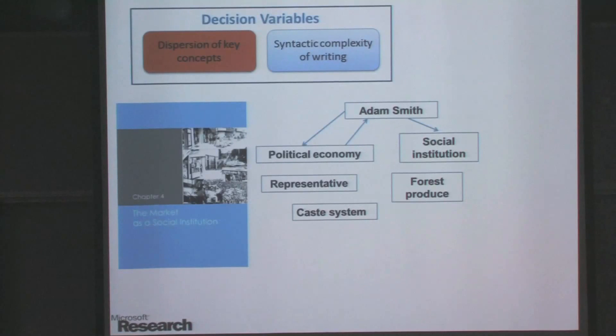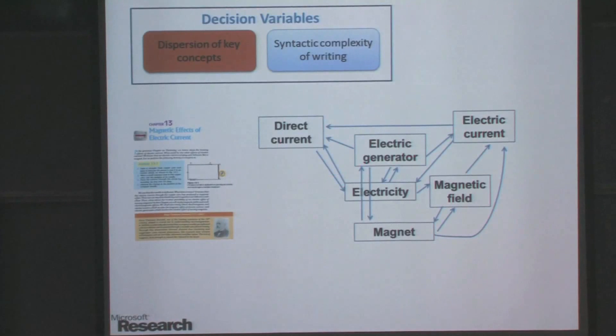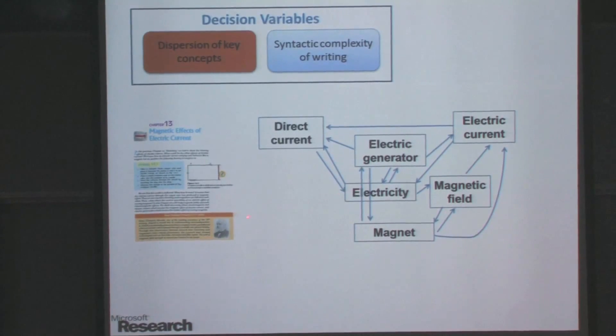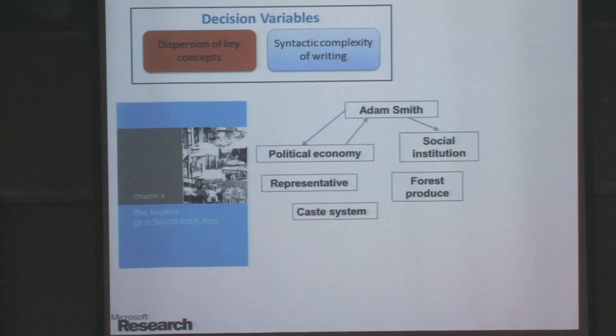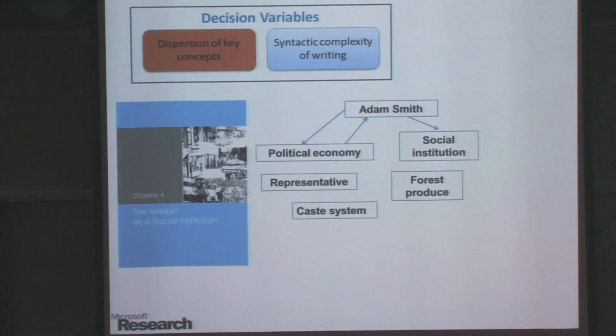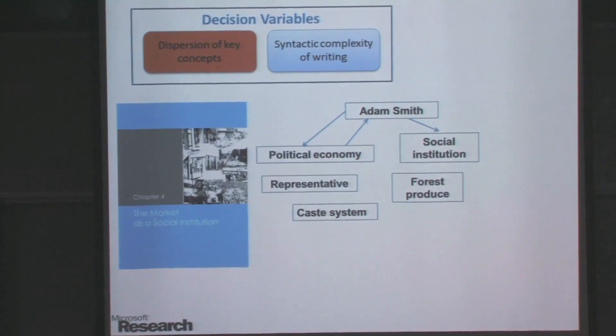Can you explain what 'related' means? Intuitively, in the physics example we believe all concepts are interrelated — like electricity and electric current. Whereas in the social science example, concepts like forest produce or caste system are intuitively not related to others. The challenge is how to formalize this intuition: how do we identify the concepts in a textbook, and once identified, how do we obtain the relationships between concepts?